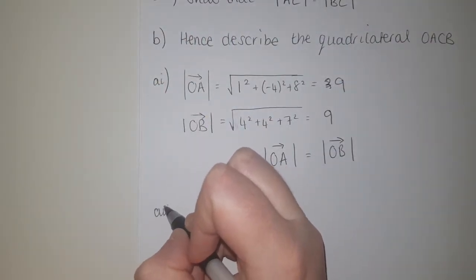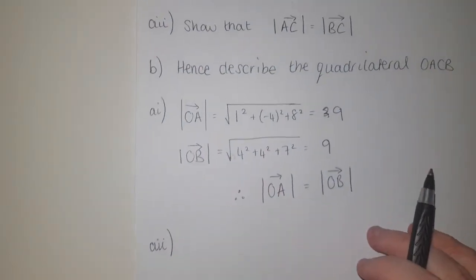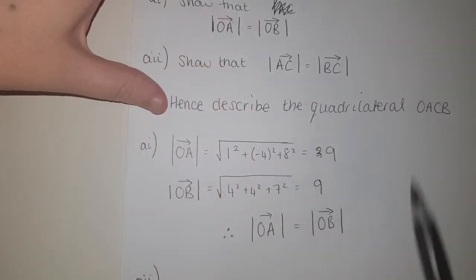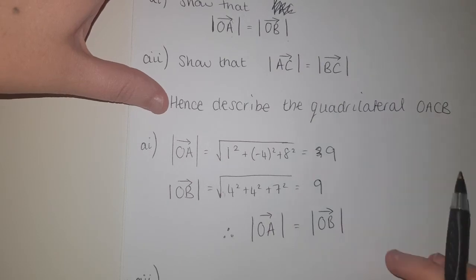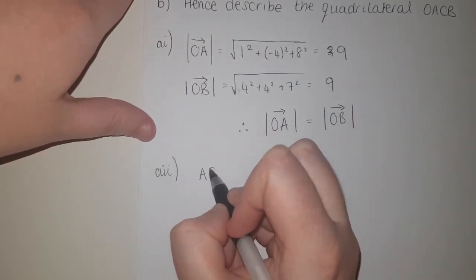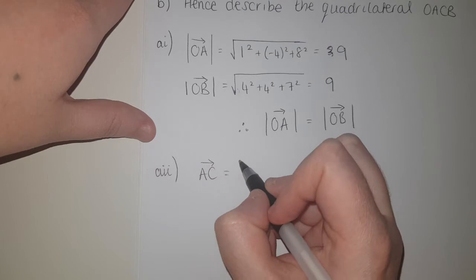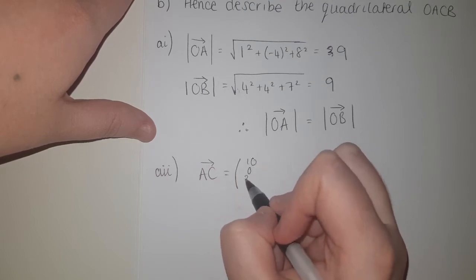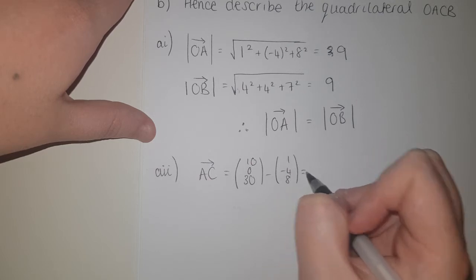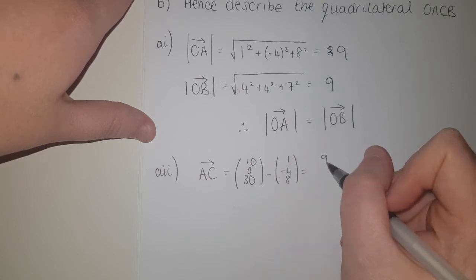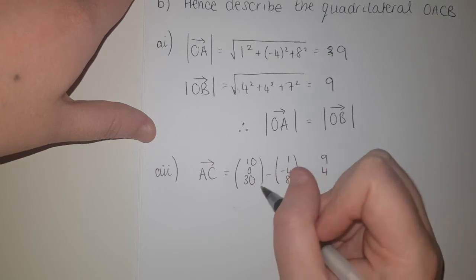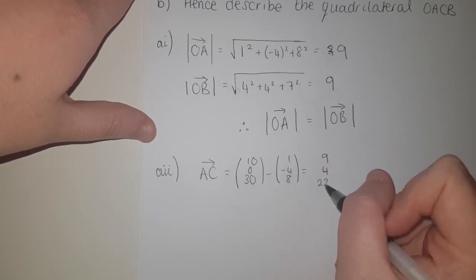Part 2 takes a little work first. We're trying to show that |AC| = |BC|. We need to work out what AC and BC are. AC = C − A, so that's (10−1, 0−(−4), 30−8) = (9, 4, 22).